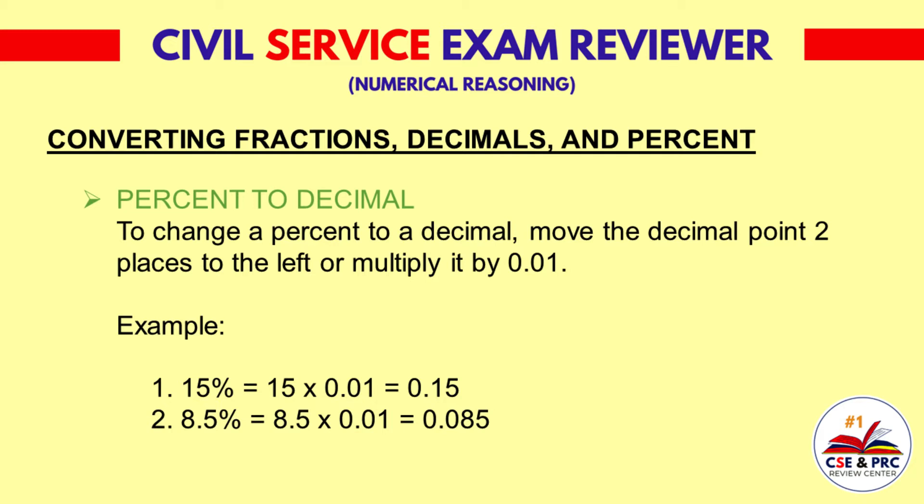Percent to decimal. To change a percent to a decimal, move the decimal point 2 places to the left, or multiply by 0.01. Example 1: 15% equals 15 times 0.01, which equals 0.15. Example 2: 8.5% equals 8.5 times 0.01, which equals 0.085.